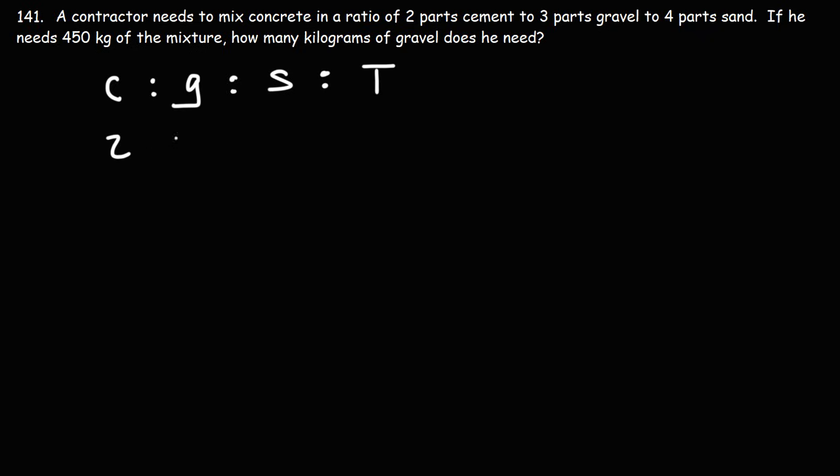So the ratio is two parts cement, to three parts gravel, to four parts sand, and the total is two plus three plus four, which is nine. So that's the ratio in simplified numbers.